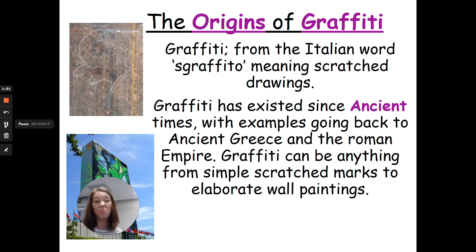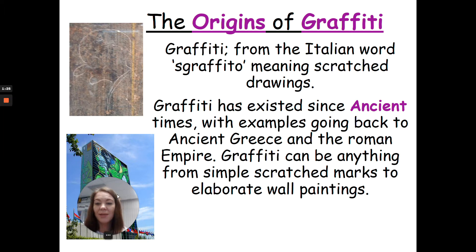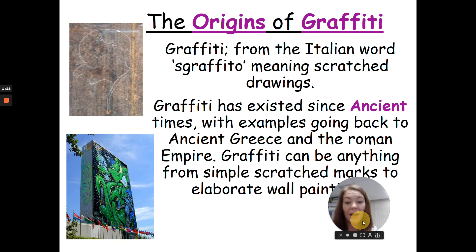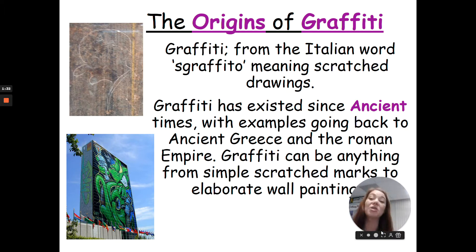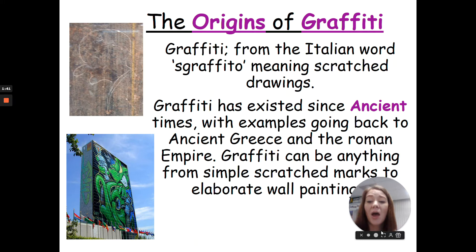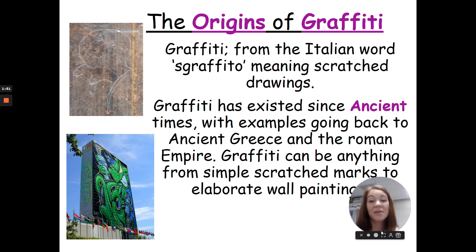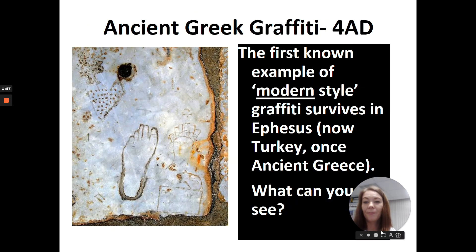Looking at the origins of graffiti: graffiti comes from the Italian word 'graffiti' which means scratched drawing. Graffiti has existed since ancient times, with examples going right back to ancient Greece and the Roman Empire. It can be anything from simple scratched drawings — like an early example scratched into stone as a side profile — through to modern day styles that are much larger scale, elaborate, bright colours, using spray paint as the main medium.